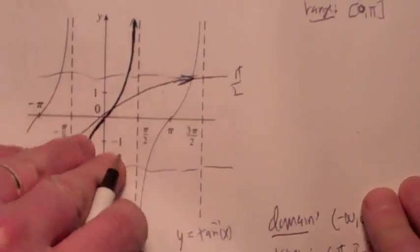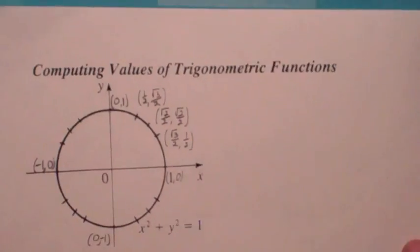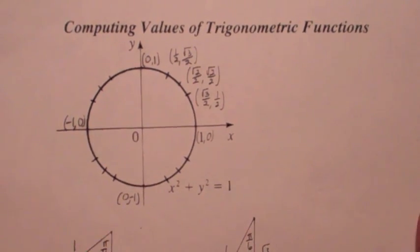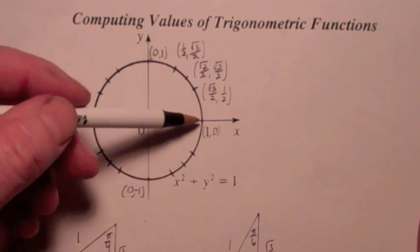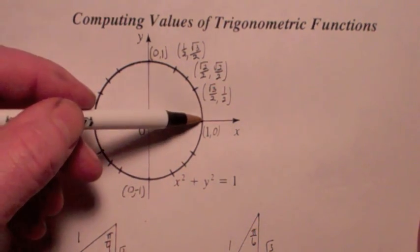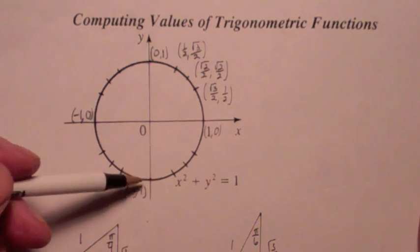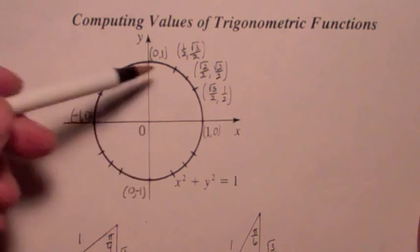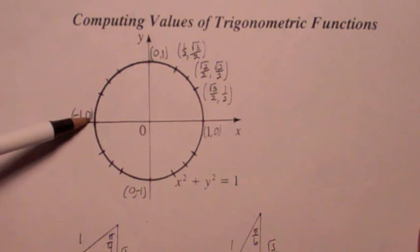The third thing you should be able to do is compute some basic trig values. First of all, there are the quadrantal angles: 0, pi over 2, pi, and 3 pi over 2. If you want to know the tangent of pi — pi is over here, the tangent is y over x, so the tangent of pi is 0 over negative 1, which is 0.